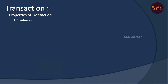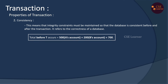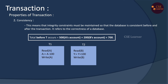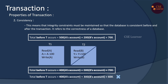That is Consistency. Consistency means the transaction must bring the database from one correct state to another correct state. For example, A account has $400 and B account has $300, so the total is $700. After the transaction transfers $100 from A to B, A becomes $300 and B becomes $400 — the total is still $700. The total remains consistent. That is the Consistency property.